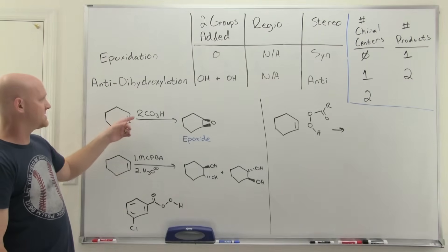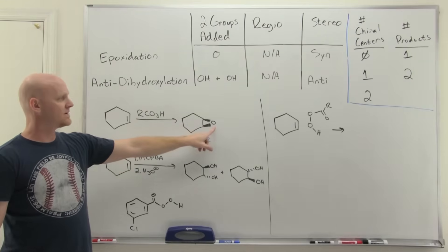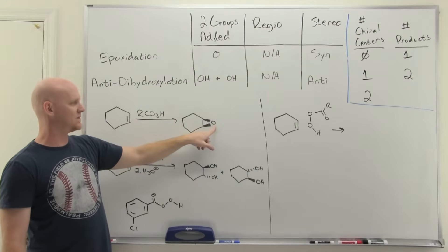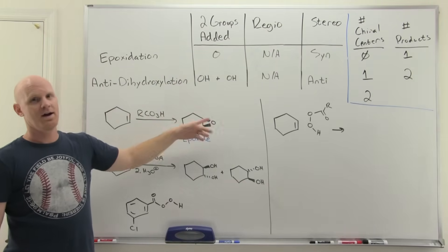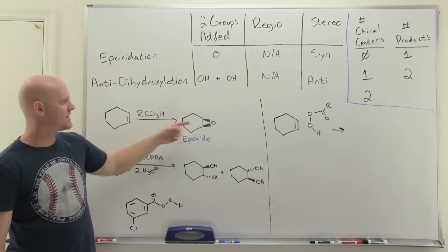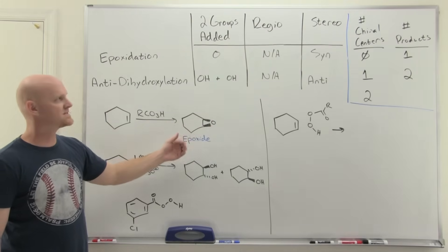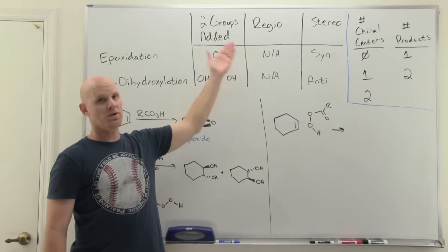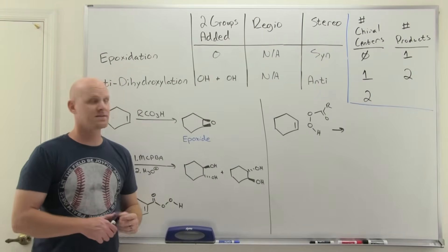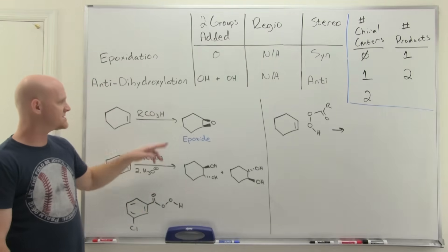If you just add a peroxy acid, you get the epoxide. Notice you don't actually add two things. You just add a single oxygen. And so that's why it's hard to say, what are the two groups added? Well, you just get one. And also, since both carbons here of the alkene are bonded to the same atom, they have to be added on the same side and so it's a syn addition. Since we're only adding one thing, there's definitely no regio selectivity to talk about. No Markovnikov or anti-Markovnikov kind of thing.